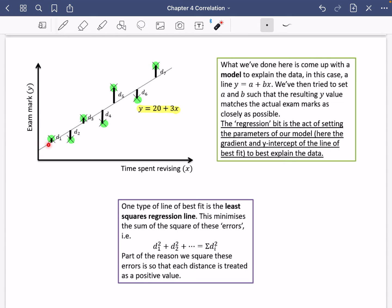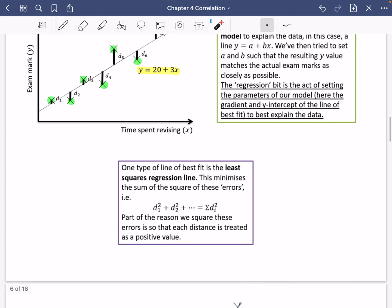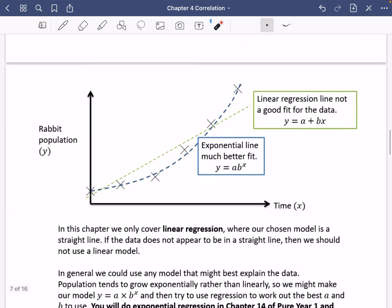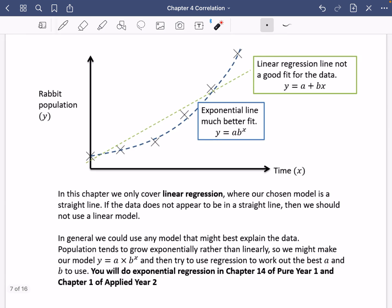So that's the technique about how you would find a line of best fit. But our calculators do all of this for us. So a little bit more about regression, because in year one, we are only going to be covering linear regression. This is an example of linear regression, this straight line that I have here, where our chosen model is a straight line. But if the data does not appear to be in a straight line, then we should not use a linear model.